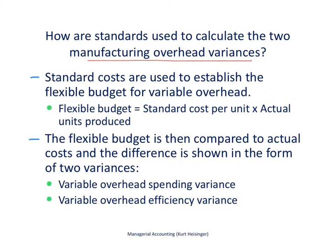We'll start by talking about the flexible budget and how we use it to calculate those two variances. The flexible budget is calculated by taking the standard cost per unit — in this example, the standard cost per unit for variable manufacturing overhead — and multiplying that times the actual units produced. The flexible budget is prepared after the year has gone by, whereas the master budget is prepared before the year starts.